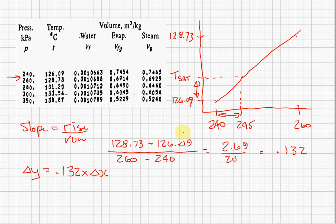Well, I know my delta x in this case is 245 minus 240, and so my delta y is going to equal 0.132 times 5, or in this case, 0.66. If that is my delta y, then to find my actual t sat, my t sat is going to be 126.09 plus 0.66, or in this case, 126.75 degrees C.